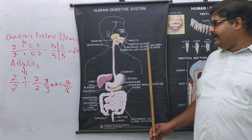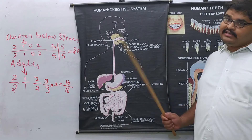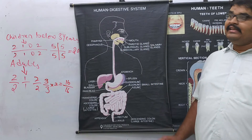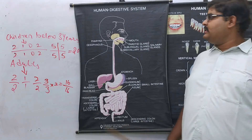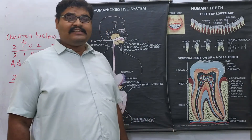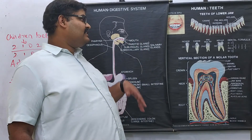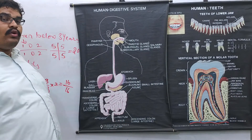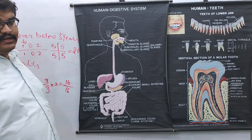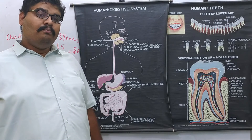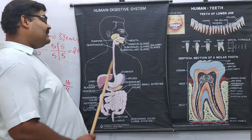Ptyalin or salivary amylase acts upon food and converts complex sugars into simple sugars. So in the mouth, both mechanical digestion with the help of teeth and chemical digestion with the help of saliva take place. Once food is thoroughly masticated and mixed with saliva, a mass of semi-digested food called bolus is formed, which is then ready to be swallowed and enters the esophagus.